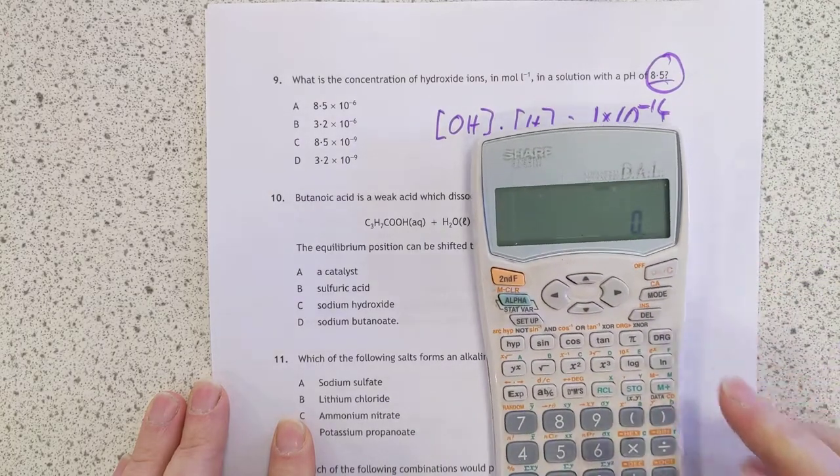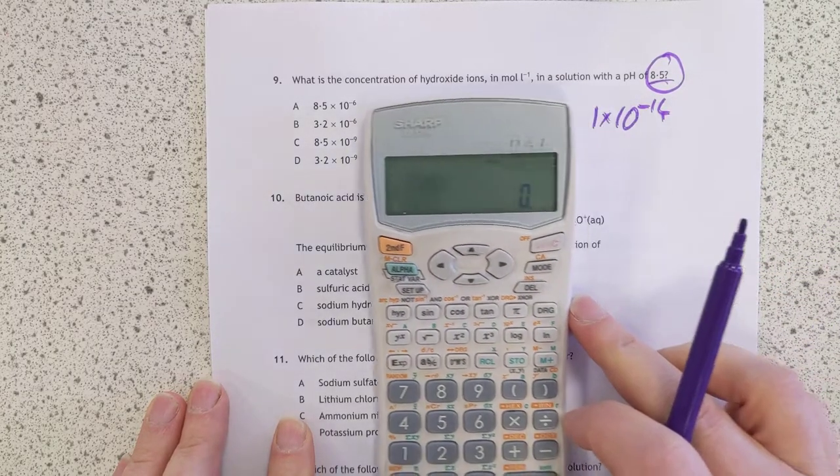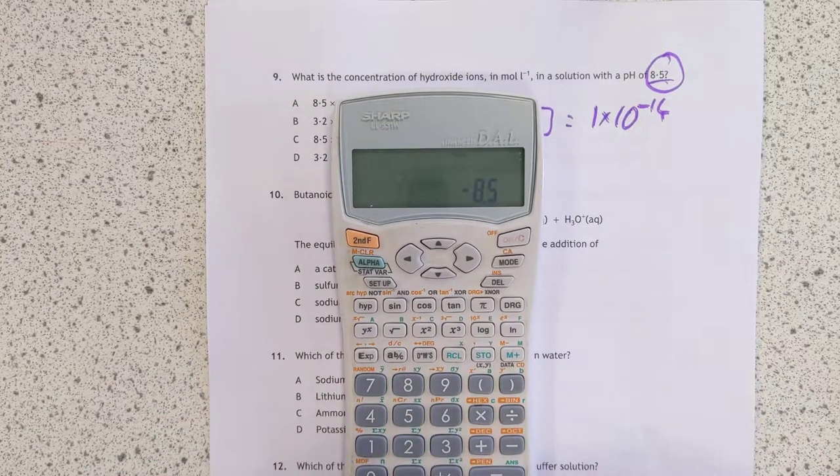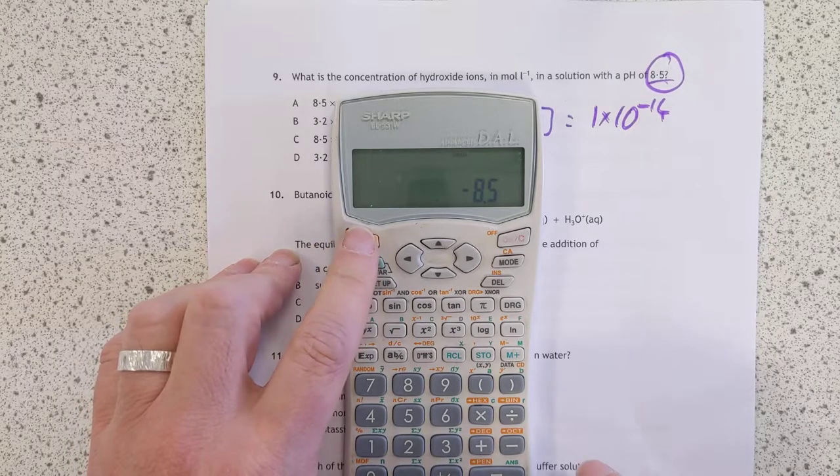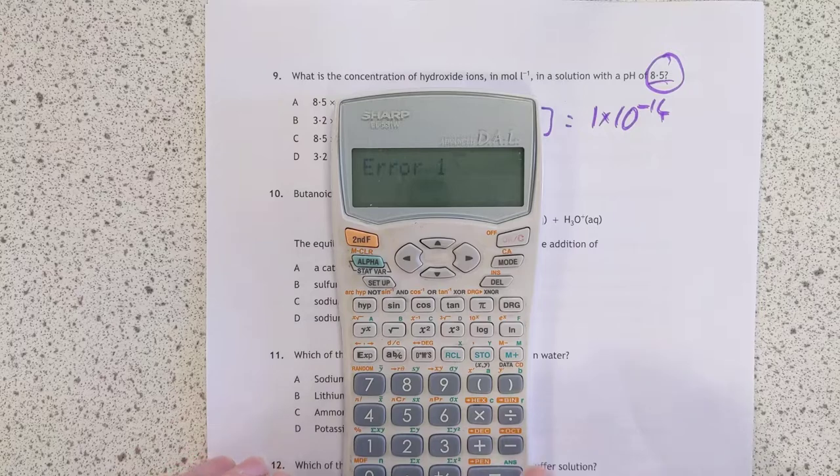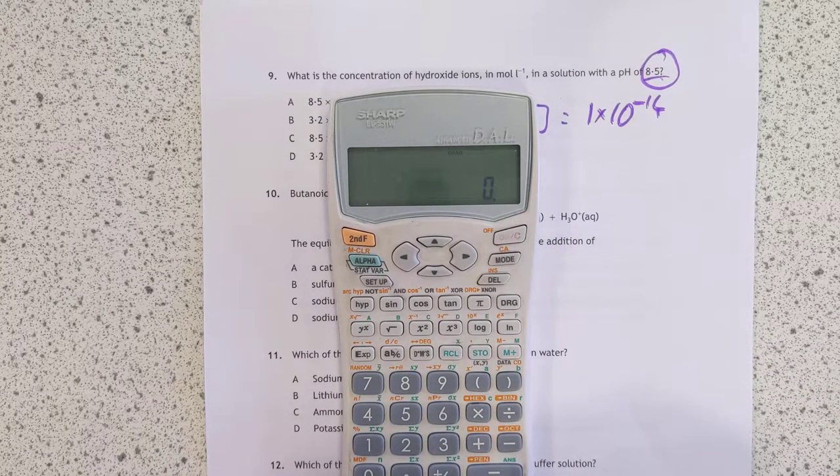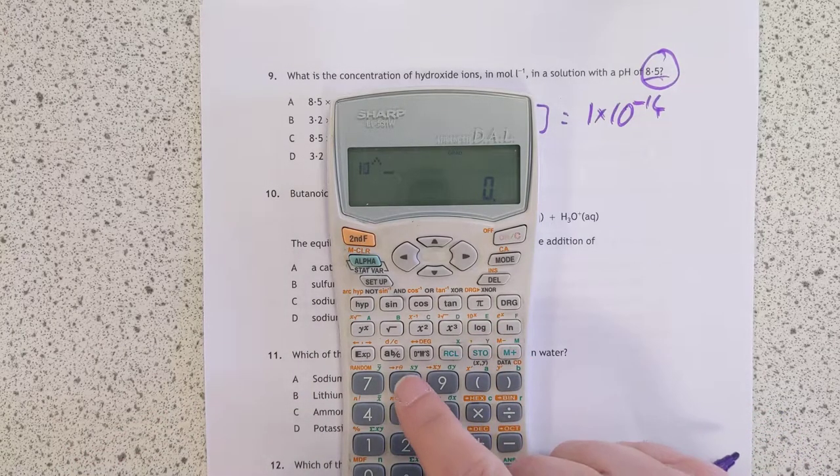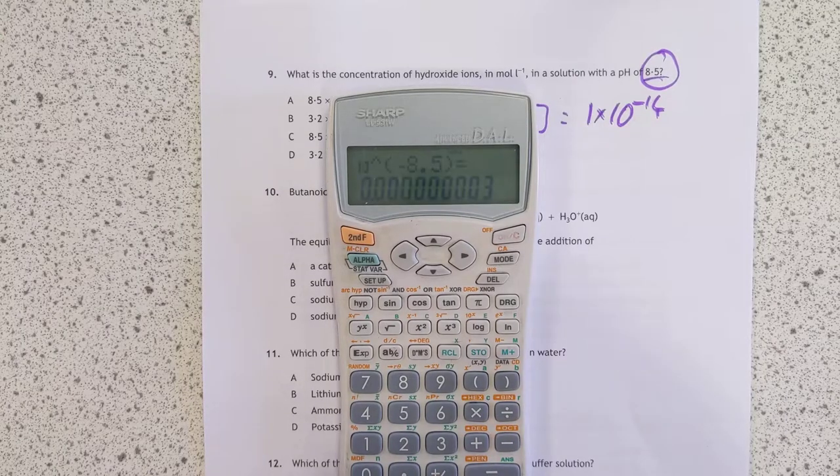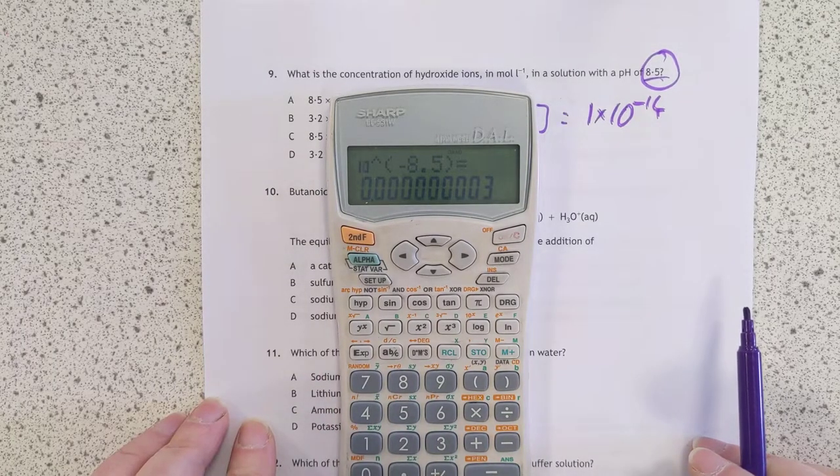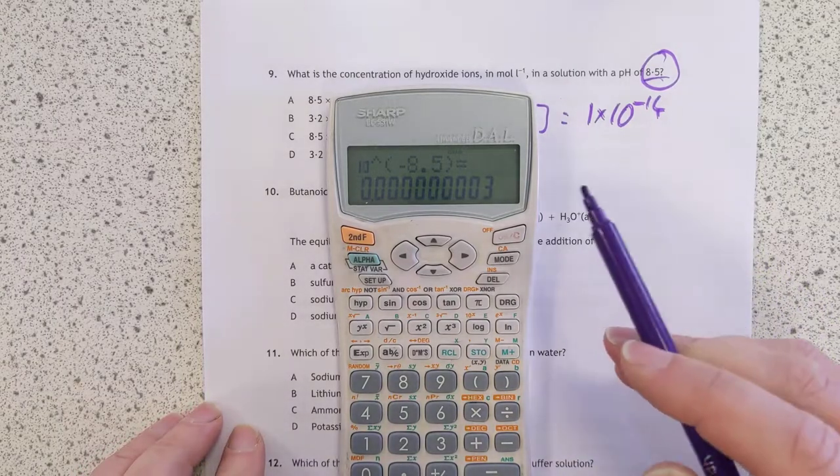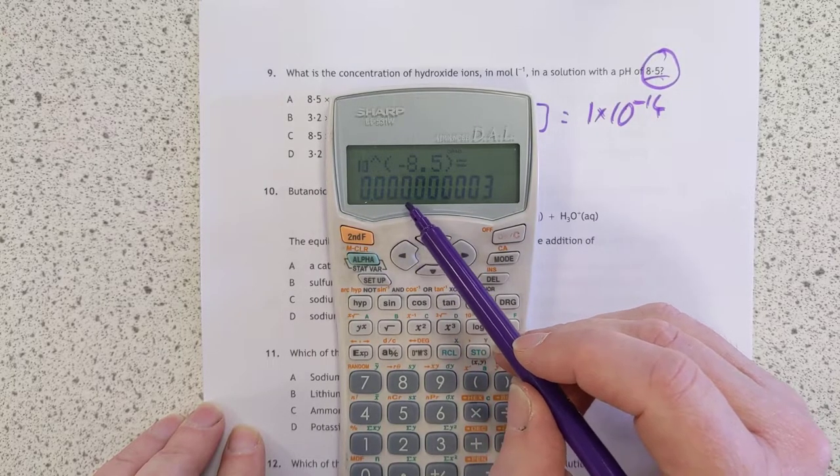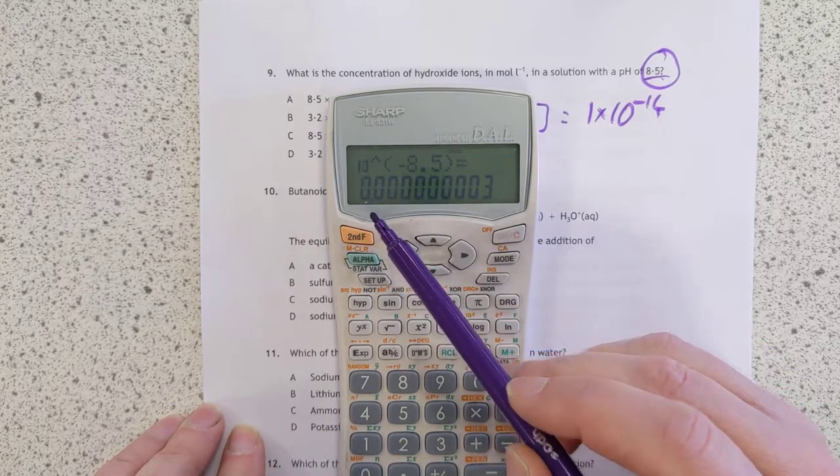So what we do is we take, now, this is not my usual calculator, so I may be having problems with this one. We take 8.5, we make it negative, and then we do shift log of it. Now, this is a modern calculator, and because I'm a dinosaur, we need to do it the other way around. So it's shift log of negative gives us, oh, this calculator's stuck in decimal place mode. Three times 10 to the negative. 1, 2, 3, 4, 5, 6, 7, oh, jeez. Too early in the morning, we don't have my specs.